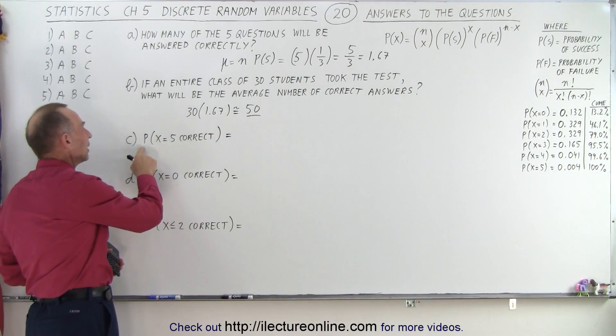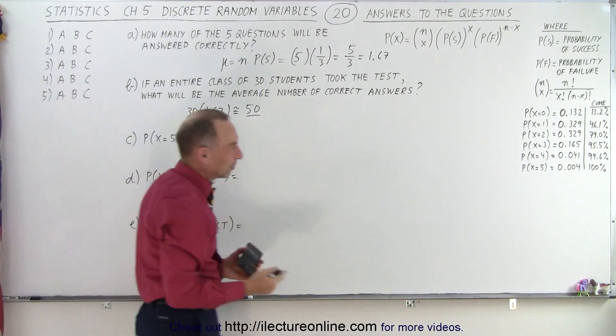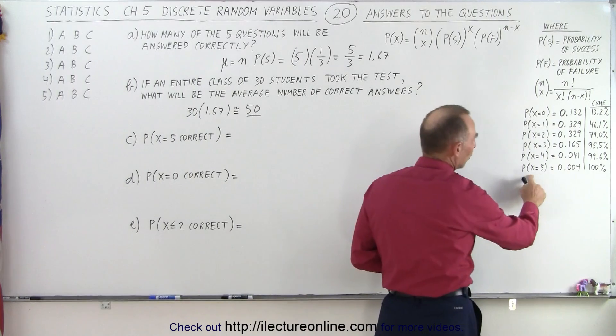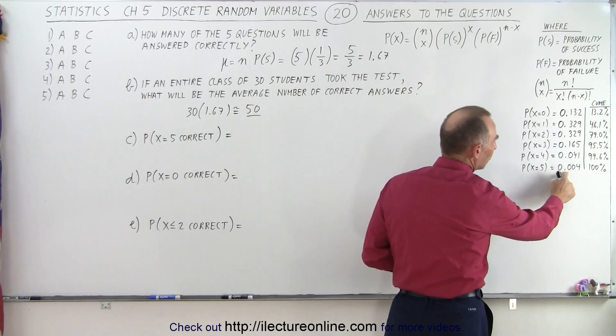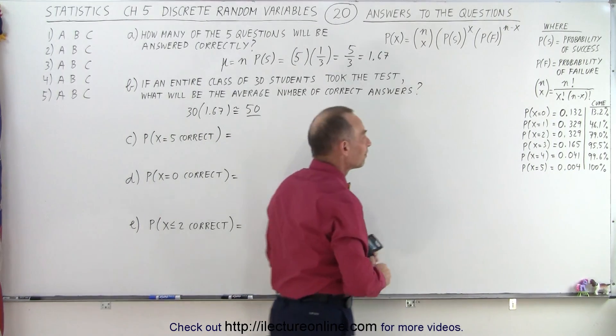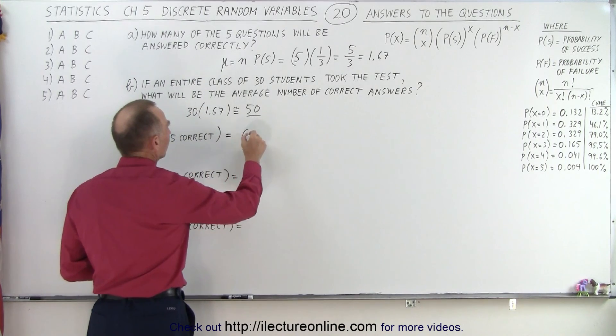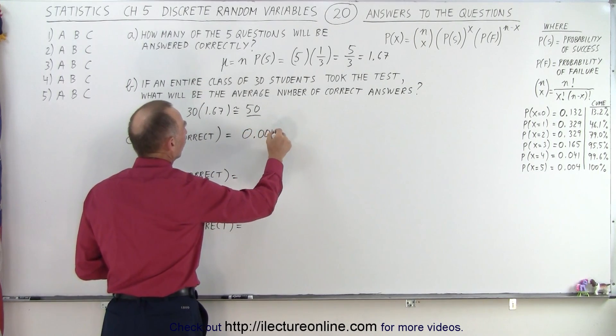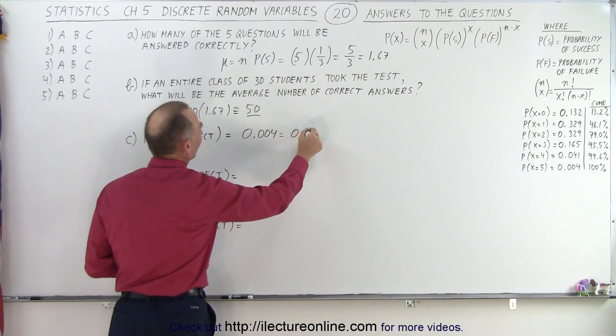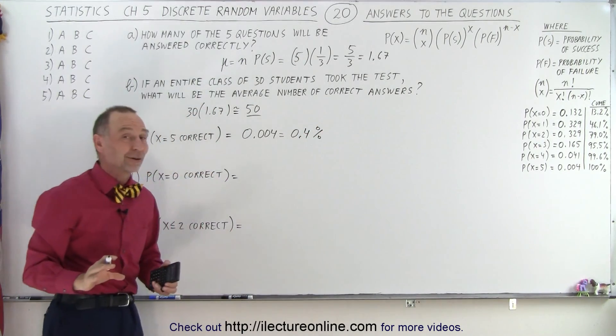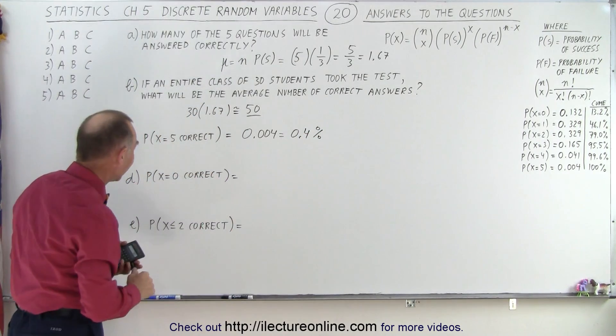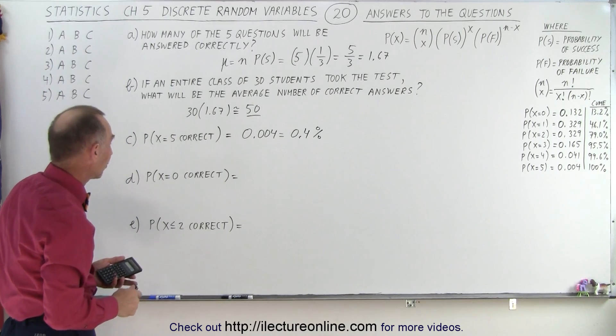Now if we are going to calculate the probability that 5 are correct, we simply go here to our table here. Notice that probability is fairly small, it's 0.004. So that would be equal to 0.004, which is equal to 0.4%. So a very unlikely scenario when you are purely guessing that you would get all 5 questions correct.